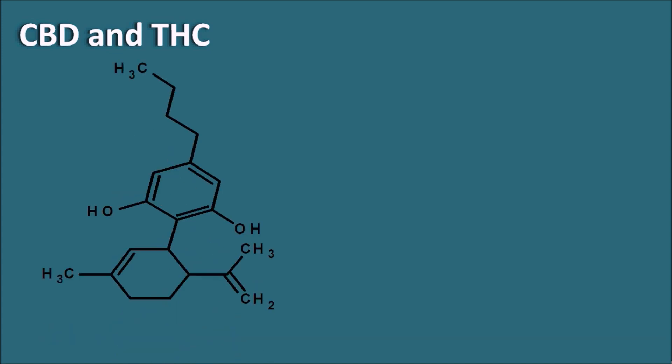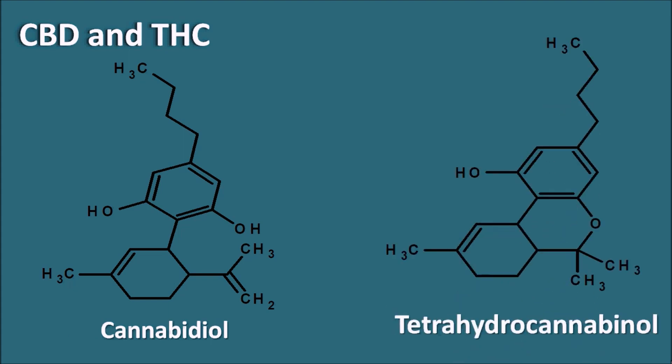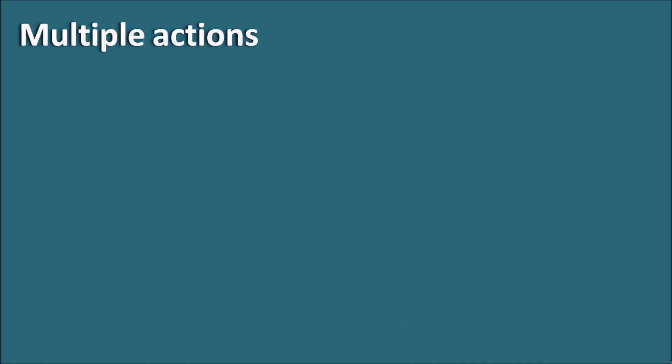Now let us look at the structures of cannabidiol and tetrahydrocannabinol. This is the structure of cannabidiol and this is the structure of tetrahydrocannabinol. We can observe that the ring is closed in tetrahydrocannabinol and it is open in cannabidiol. These are the two important components present in the cannabis species, but among them cannabidiol is nowadays therapeutically useful as an anti-epileptic drug.